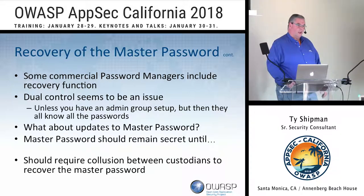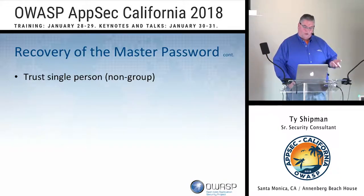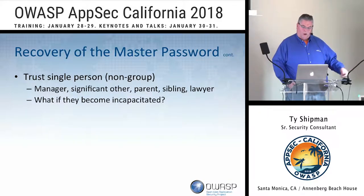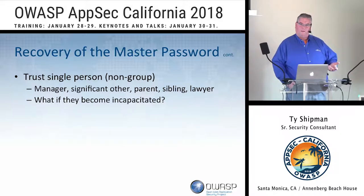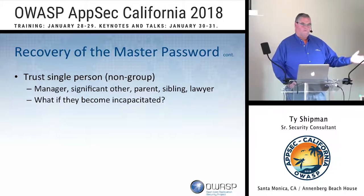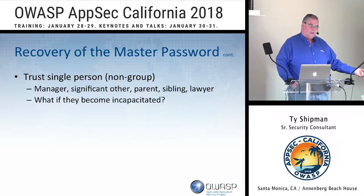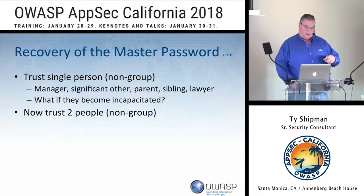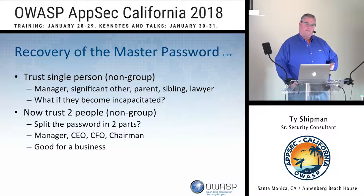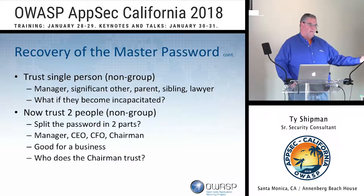You can trust a single person — good for businesses. You tell your boss, your manager, or a lawyer. But what if they become incapacitated? Now you're in trouble, especially if you're traveling in the same car and you both pass away. Now there are two cleanups to happen. So you go to two people — but how do you sync those, and how do they come together? What happens if one of them gets incapacitated? It's an on-and-on-and-on problem.